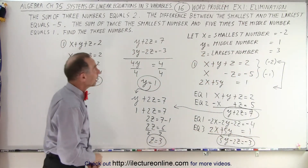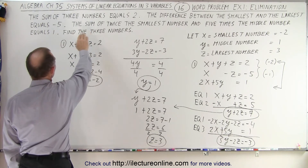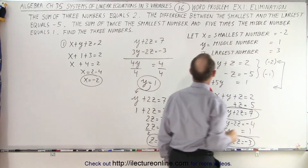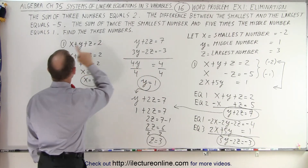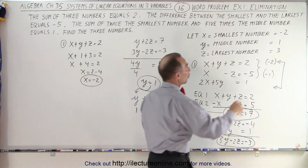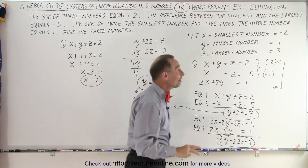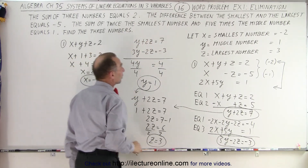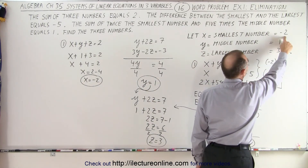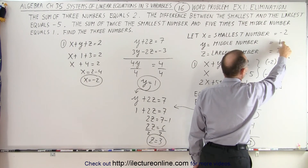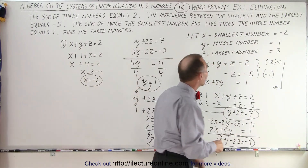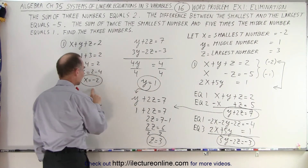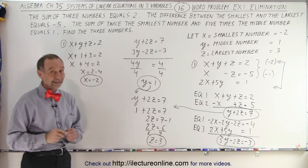Let me verify these answers. The sum of the three numbers: 3 plus 1 minus 2 equals 2 — checks out. The difference between the smallest and the largest: negative 2 minus 3 equals negative 5 — correct. Twice the smallest number is negative 4, and 5 times the middle number is 5, and negative 4 plus 5 equals 1 — that checks too. All three conditions match, so x equals negative 2, y equals 1, and z equals 3.